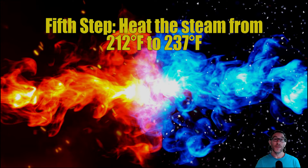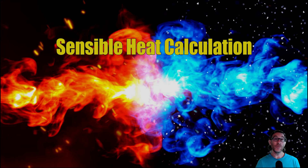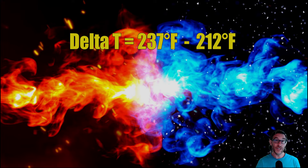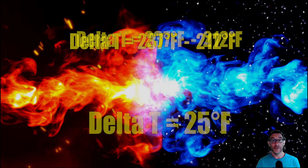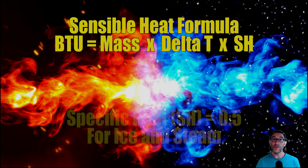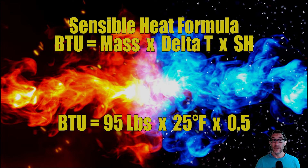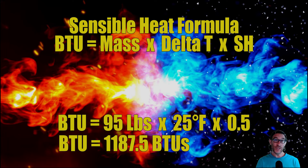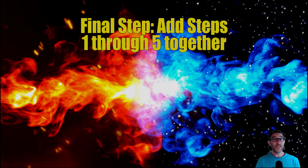We're getting close. Fifth step: let's take this steam, which is at 212 degrees Fahrenheit, and heat it all the way up to 237 degrees Fahrenheit. This is a sensible heat calculation. The delta T is 237 minus 212 degrees Fahrenheit, which gives 25 degrees Fahrenheit. The specific heat capacity of steam is 0.5. So BTUs equals 95 pounds times 25 degrees Fahrenheit times 0.5. To heat that steam up 25 degrees Fahrenheit, we'll consume 1,187.5 BTUs. Let's write that down.